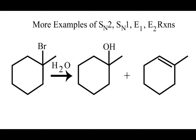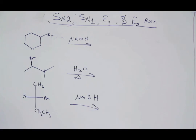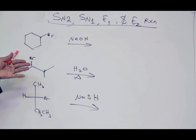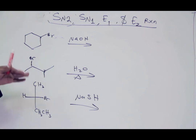Here are some examples. First, we want to identify if it's SN1, E1, E2, or SN2, and then we also show the products.